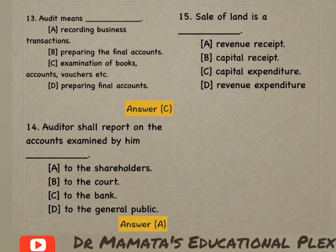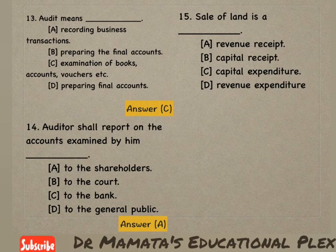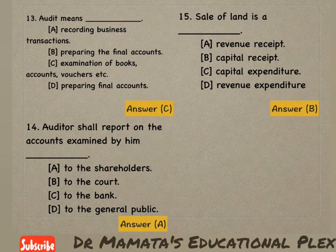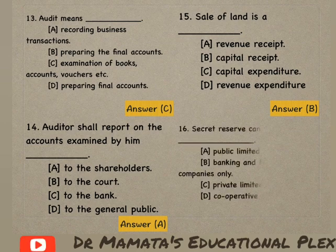Next: Sale of land is — a revenue receipt, capital receipt, capital expenditure, or revenue expenditure? Sale of land: land jo hai woh fixed asset hai, aur fixed asset yaani ki woh capital hai. Uski agar sale hoti hai toh jo receipt milti hai woh capital receipt hogi. So option B is the correct answer.